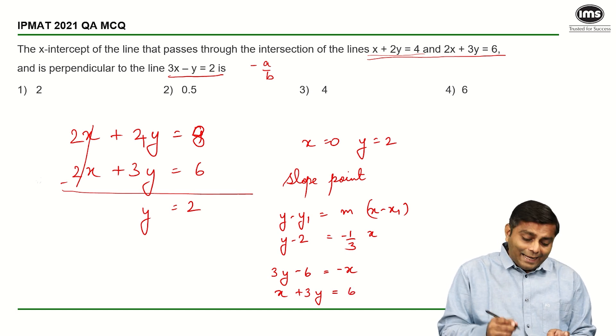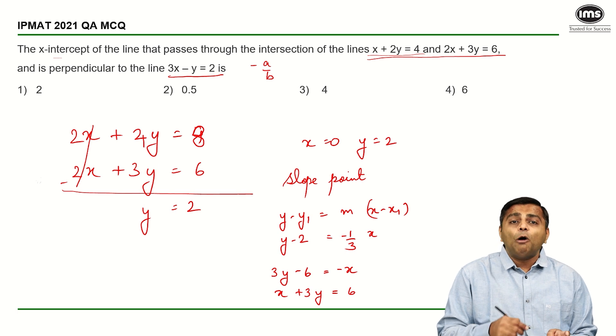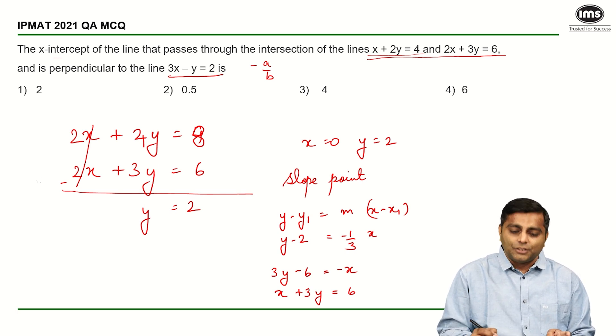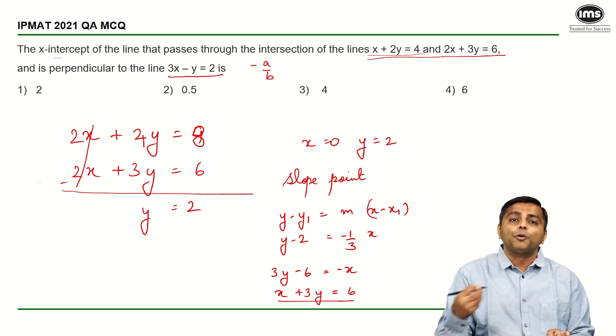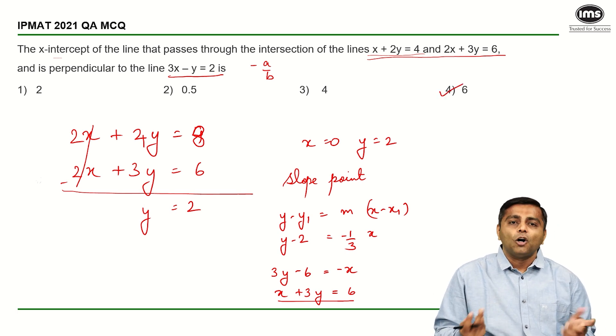Now what is the x-intercept of this line is what we are asked. How do we get x-intercept? We get x-intercept when we put y is 0. So in this equation, if you put y is equal to 0, you are going to get x is equal to 6 and hence the answer is 4th option.